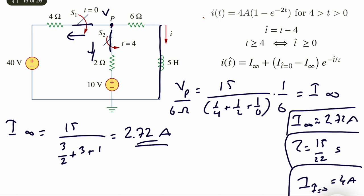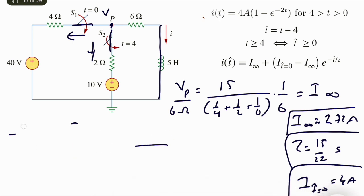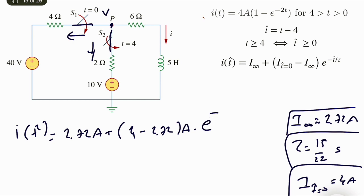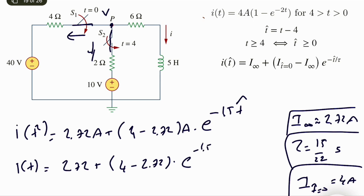Now we plug into the equation. i(t-hat) equals 2.72 amps plus (4 minus 2.72) amps times e to the power of minus t-hat divided by tau, where 1/tau is approximately 1.5. So the exponent is minus 1.5 times t-hat. In the original problem we want current with respect to t, so we substitute t-hat equals t minus 4, giving i(t) equals 2.72 plus 1.28 times e to the power of minus 1.5 times (t minus 4).